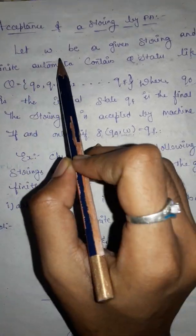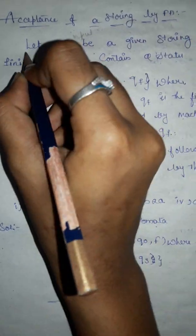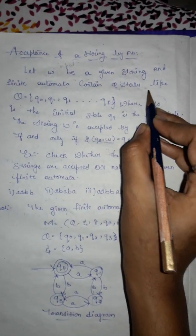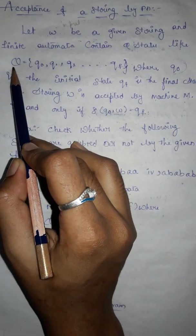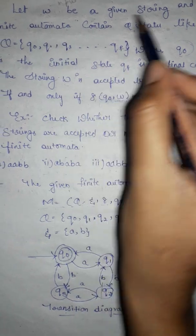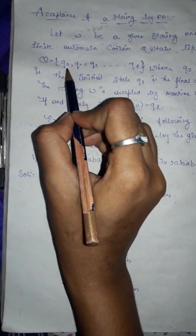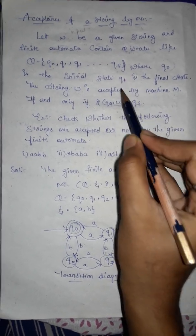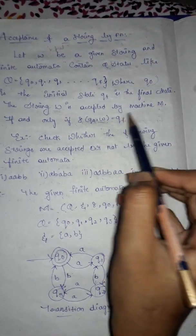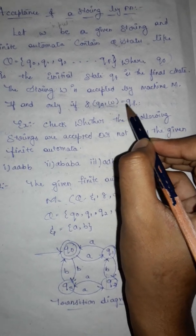Let w be a given string — w is an input. The finite automata contains q states: q0, q1, q2, q3, and so on. Here q0 is the initial state and qf is the final state. The string w is accepted by machine M if and only if the transition of q0 comma w equals qf.